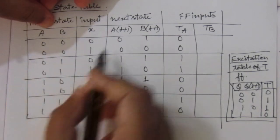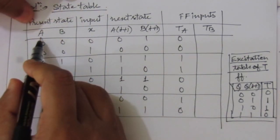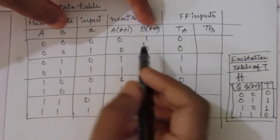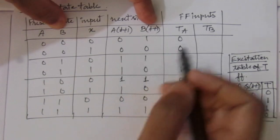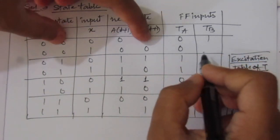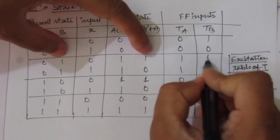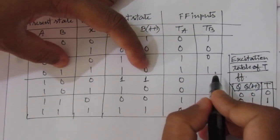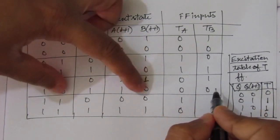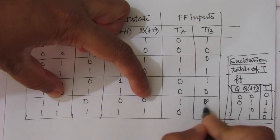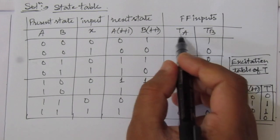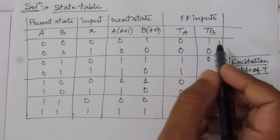We look at the present state and next state of the A flip-flop using the first and fourth columns. Next, for TB, we look at the present state and next state of the B flip-flop. For B transitions: 0→1 gives 1, 0→0 gives 0, 1→1 gives 0, 1→0 gives 1, 0→1 gives 1, 0→0 gives 0, and 1→0 gives 1.